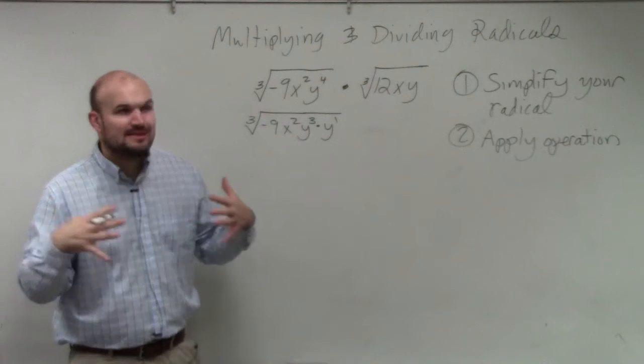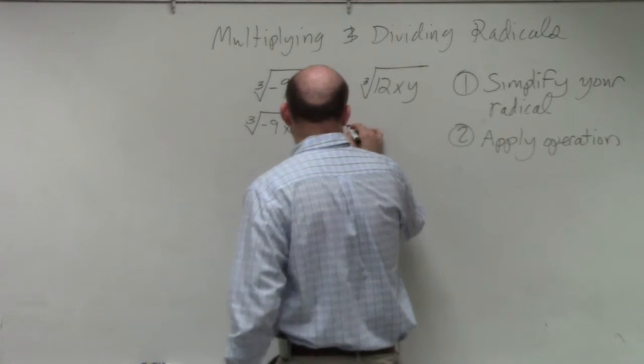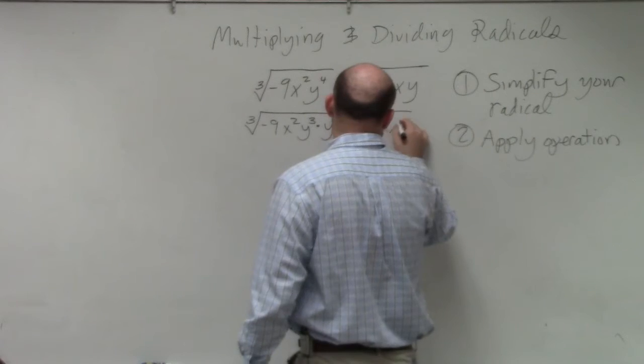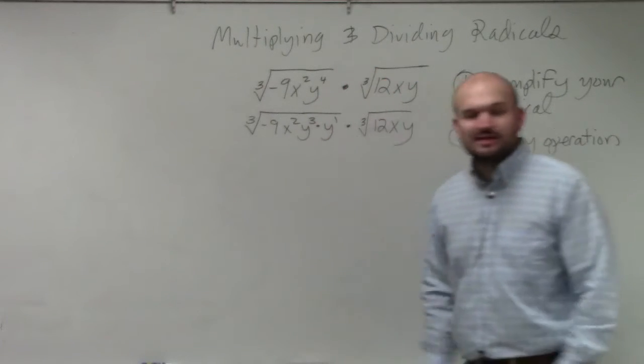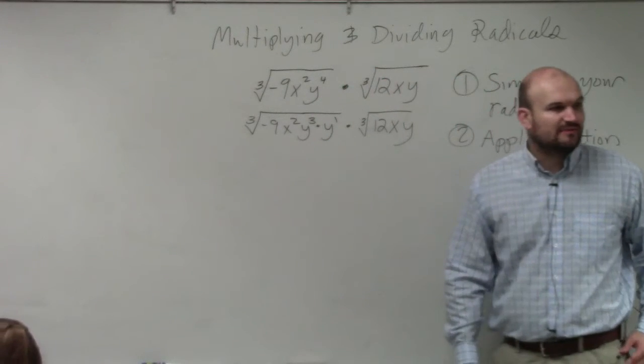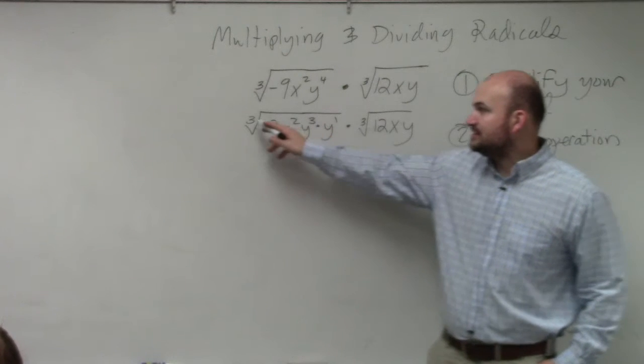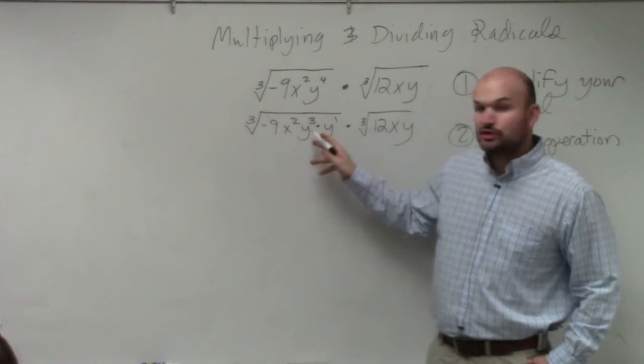Always try to simplify. I think it's just easier. You could multiply everything first and then simplify, but I'm just telling you, I think it's easiest if you guys can simplify. So therefore, can we apply the identity element on the cube root of y cubed?